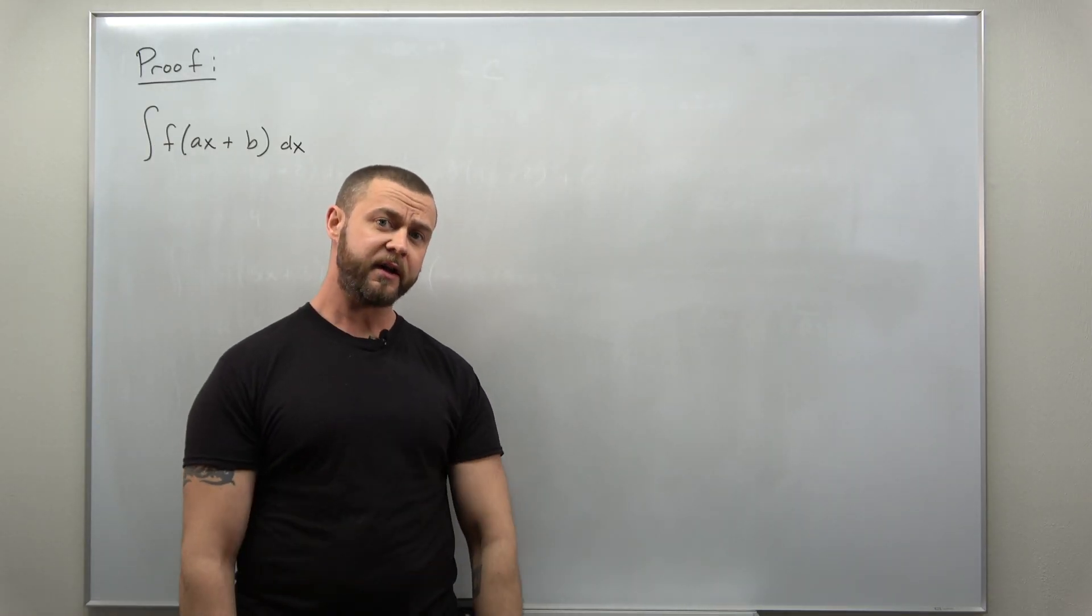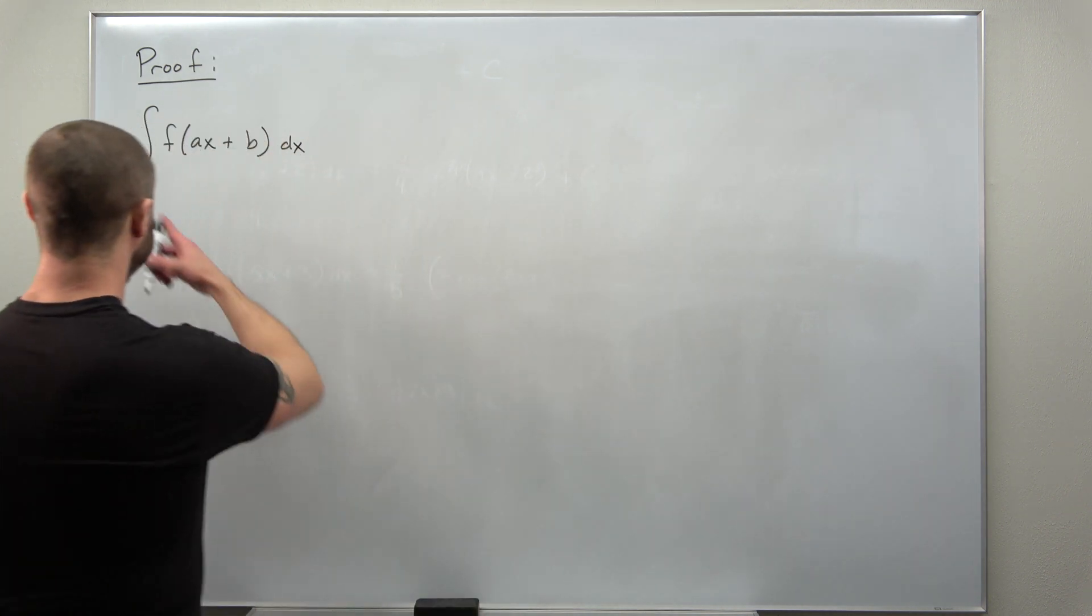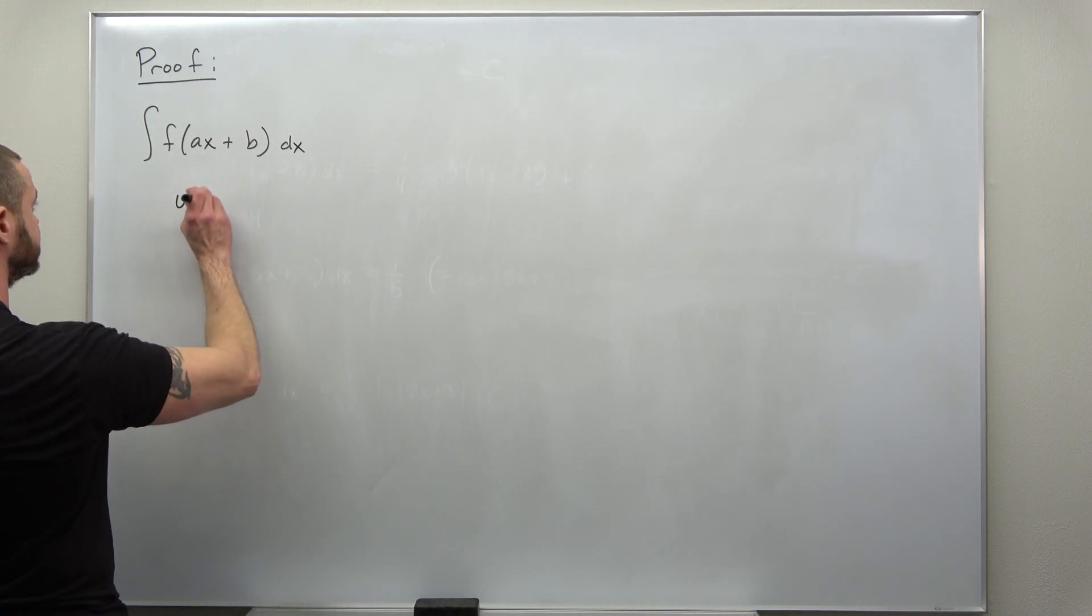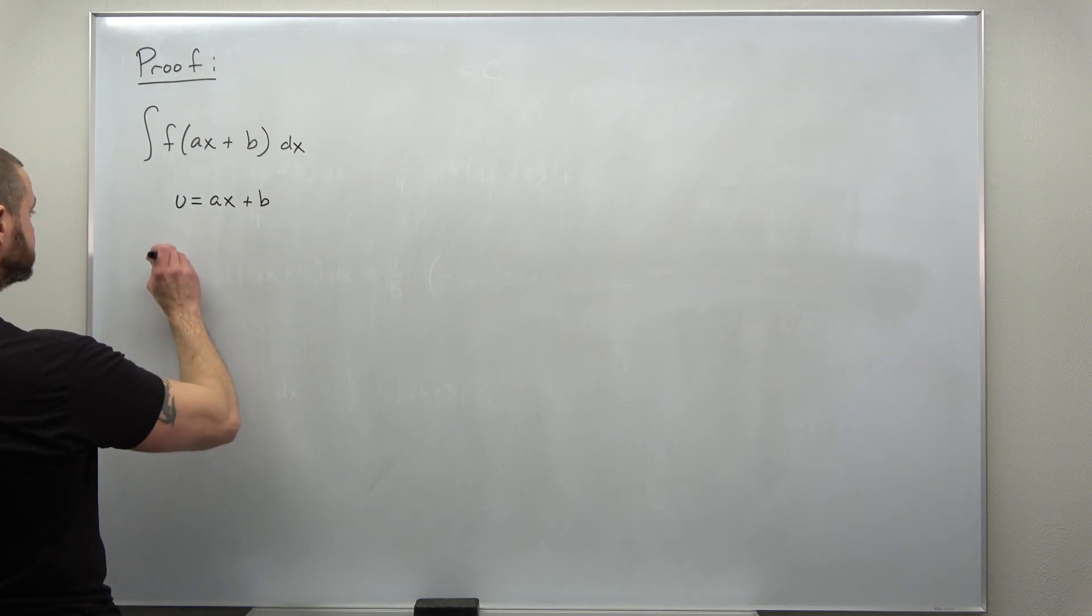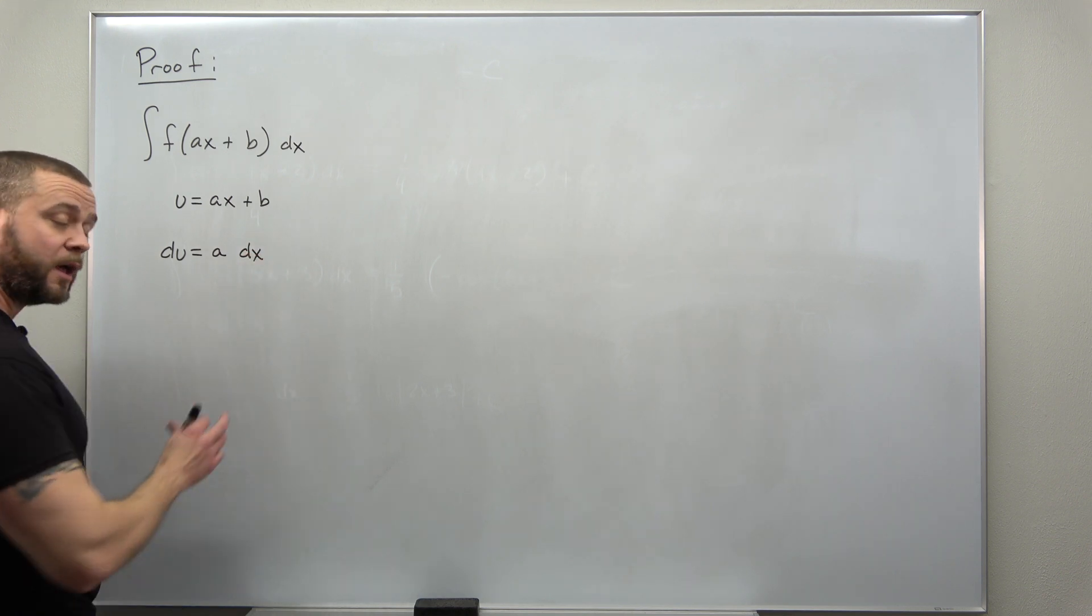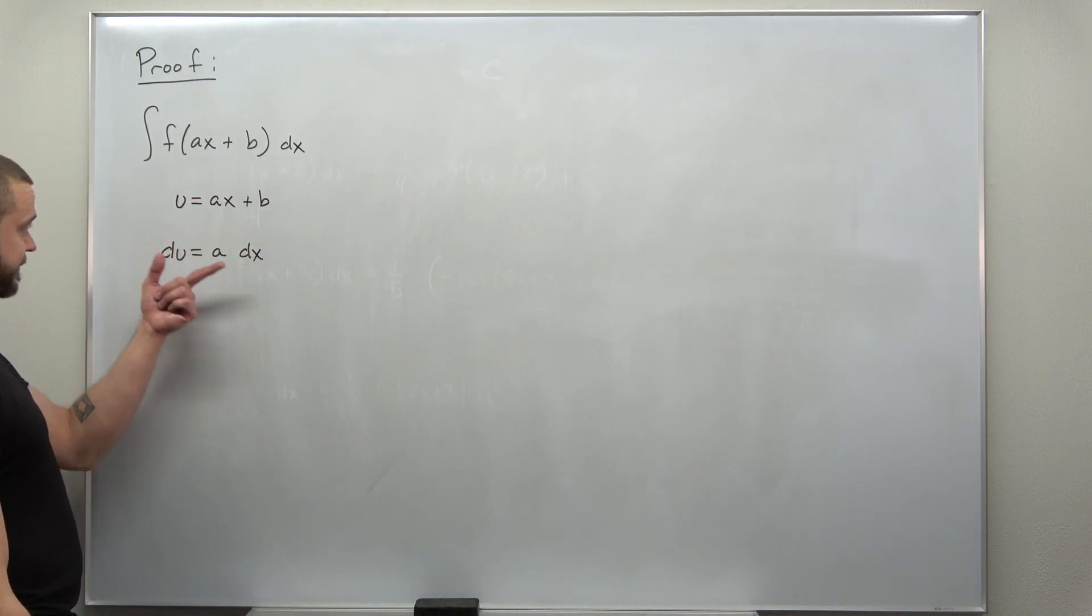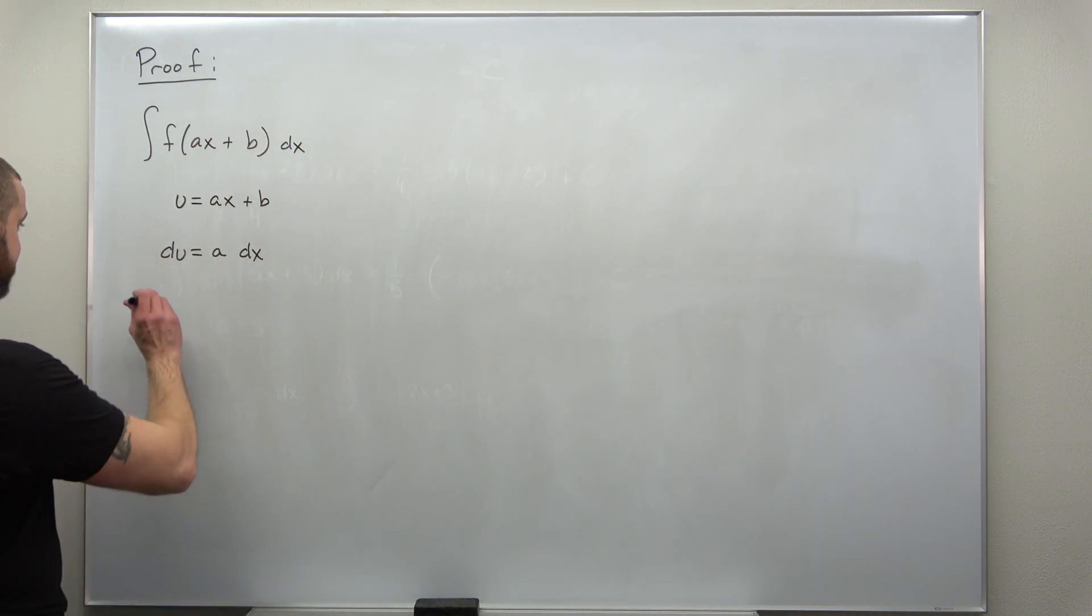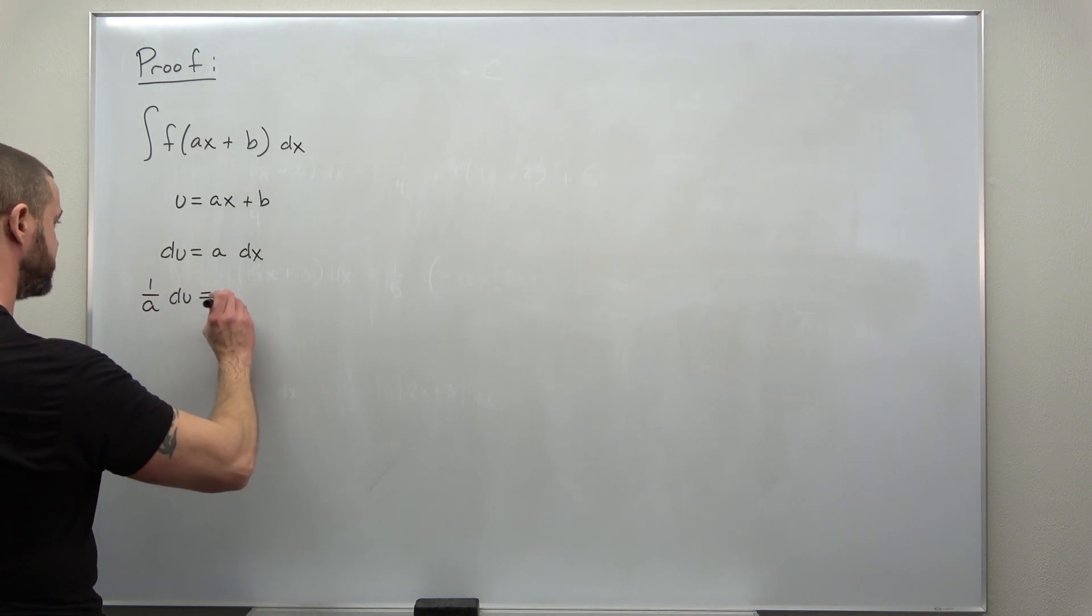For the proof of the 1 over a shortcut, we're going to go through a full substitution. So we're going to pick the u as the inner linear expression. Calculate your differential. And the crucial step here, where the 1 over a comes from right here, convert this since we're missing a factor of a outside the function in the integral. Divide that over, 1 over a du equals dx.